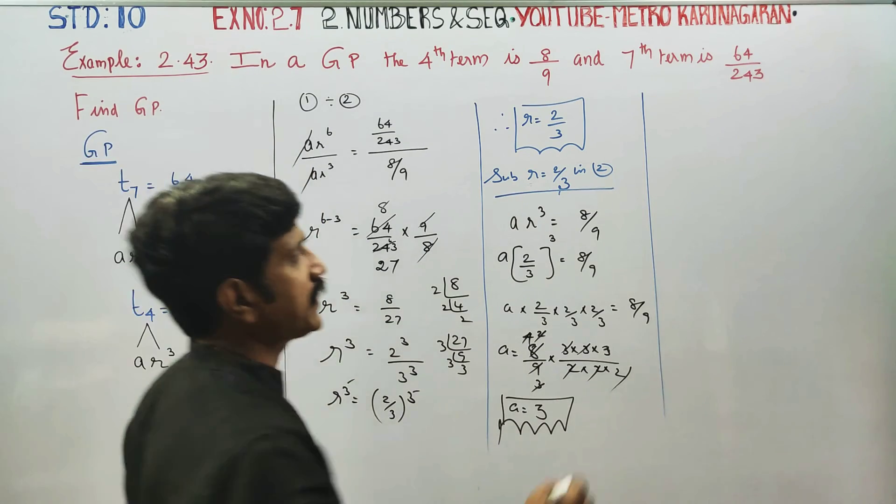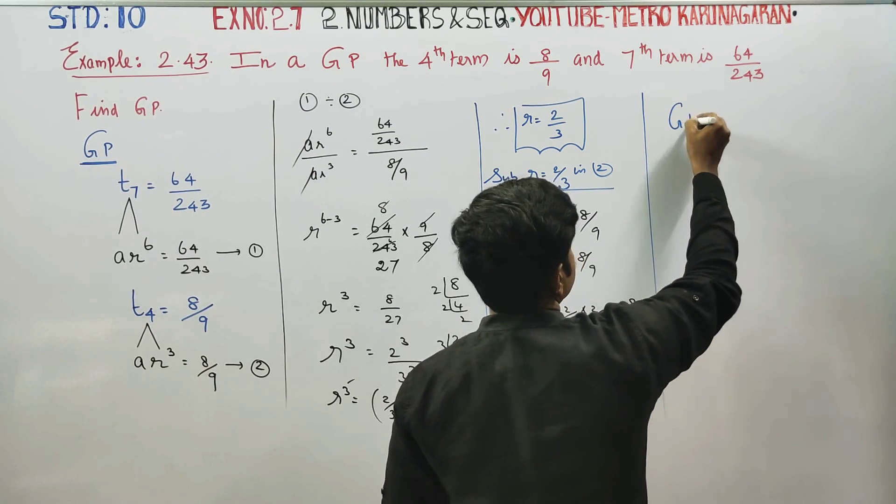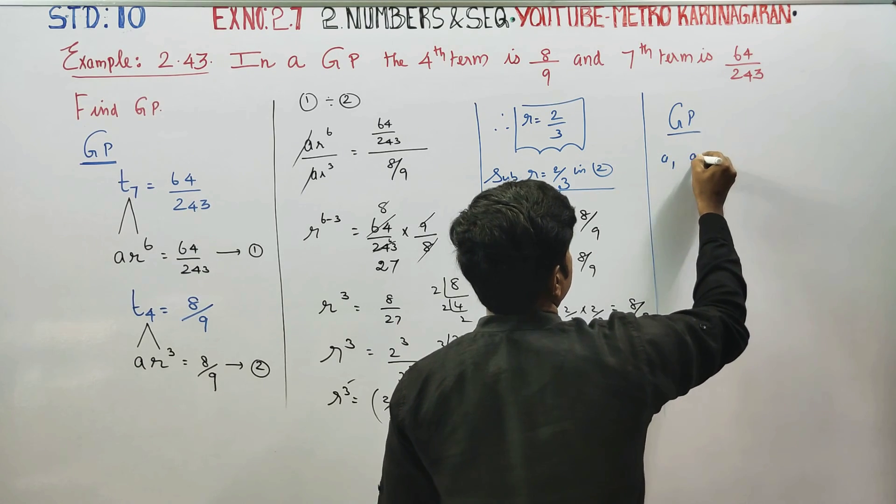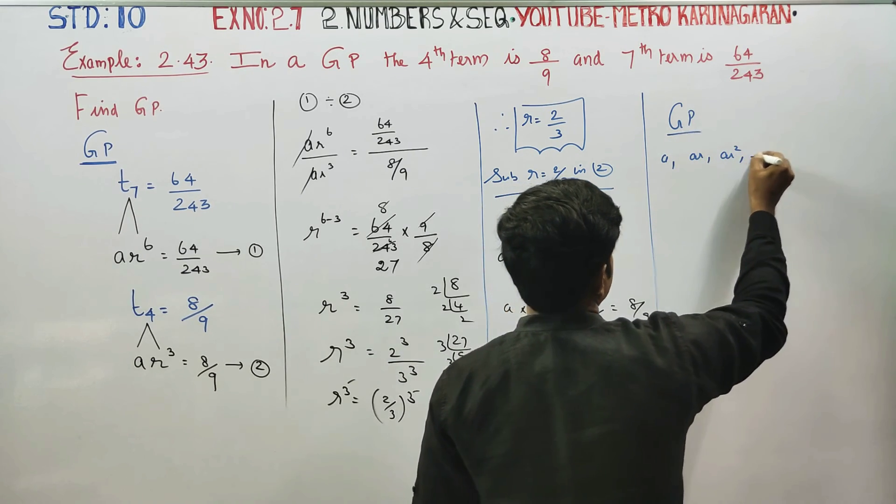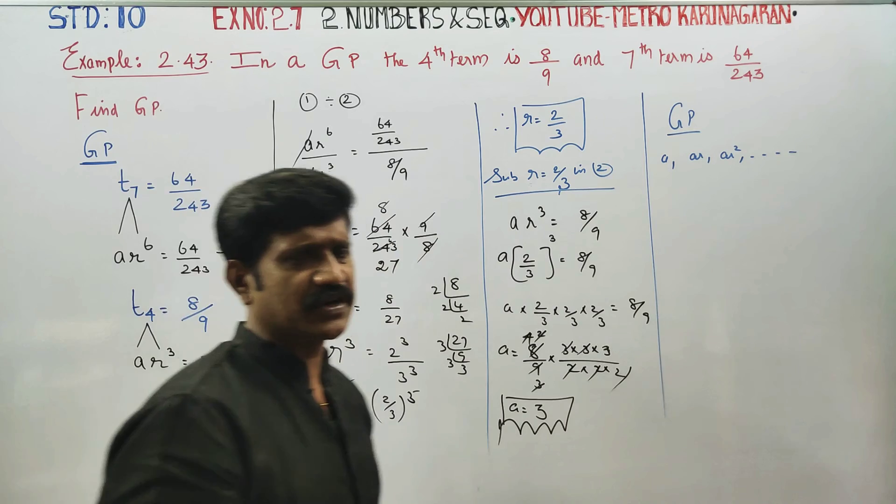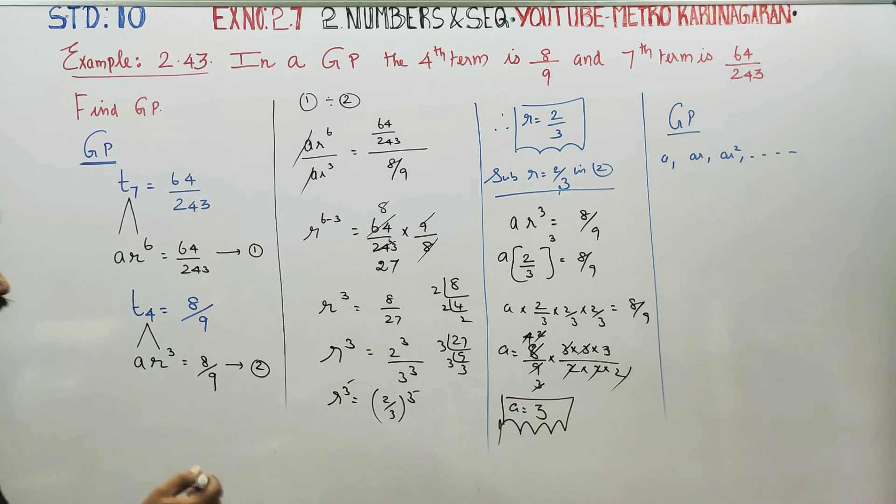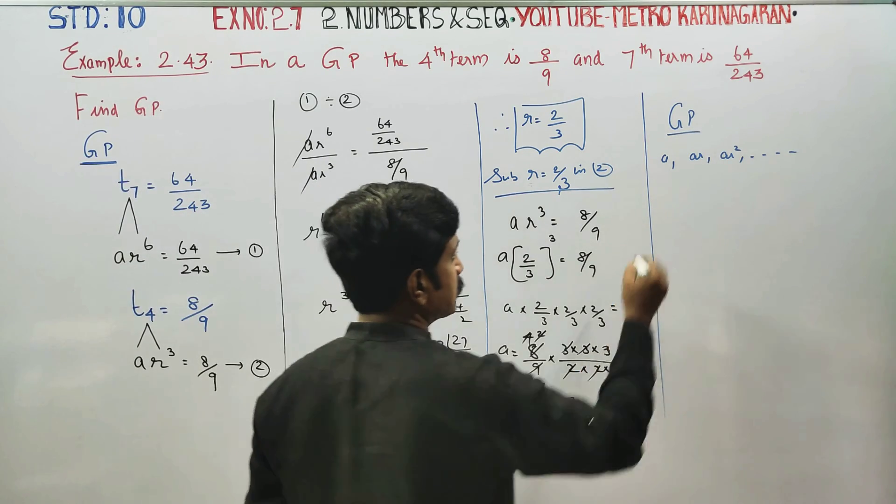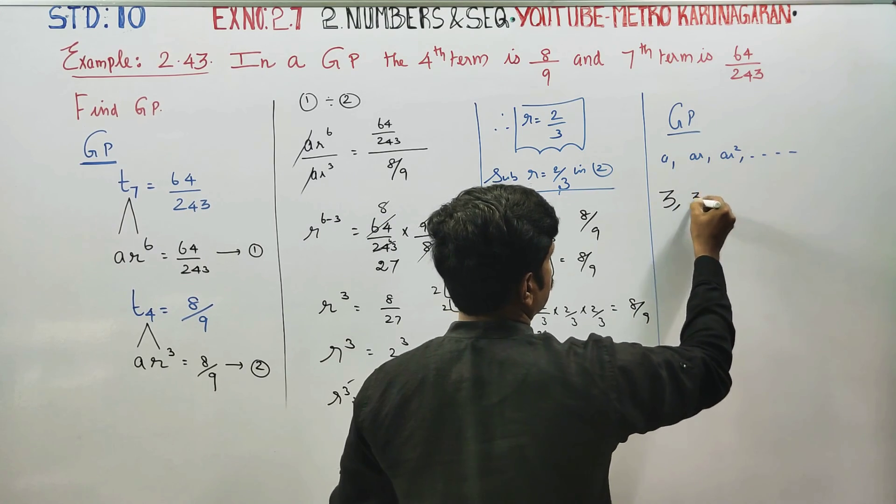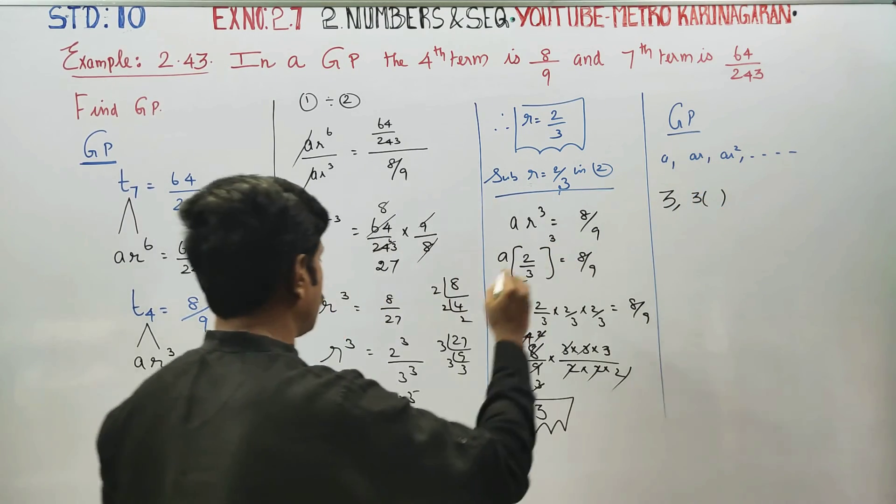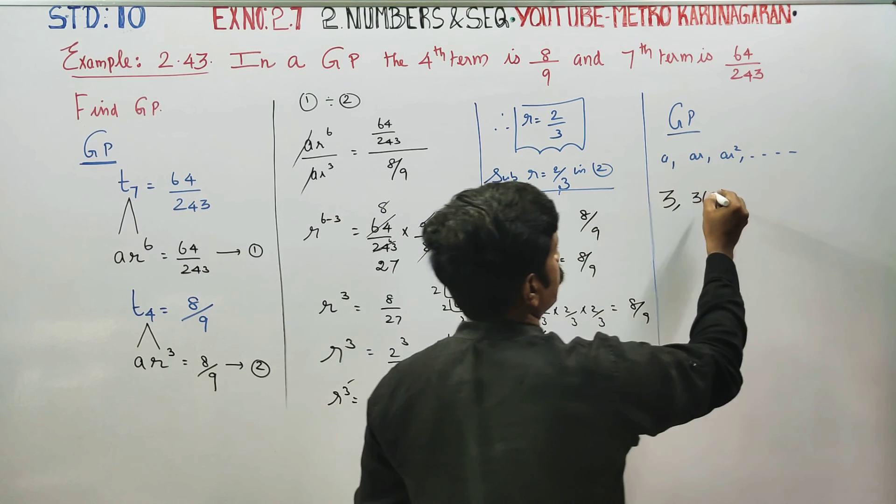Find GP. GP general, A, AR, AR square, dot dot dot. What is my A? 3, 3, 3. A into R, 3 into R, R, R, R 2 by 3.